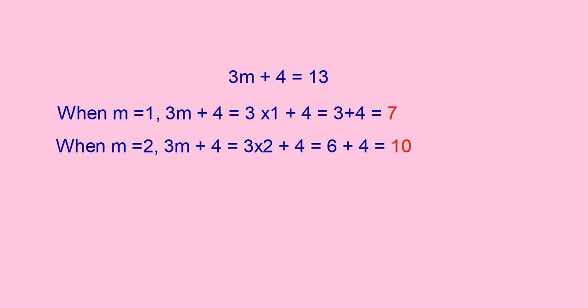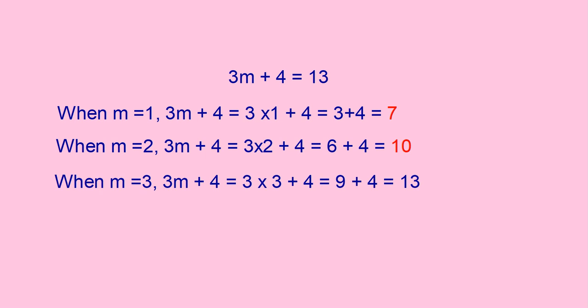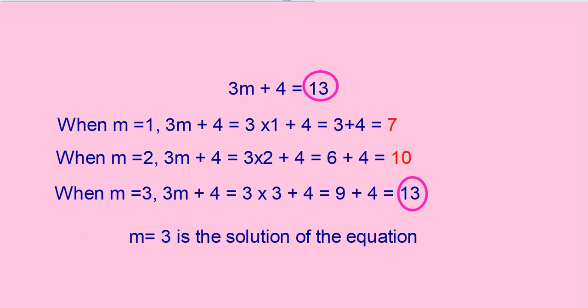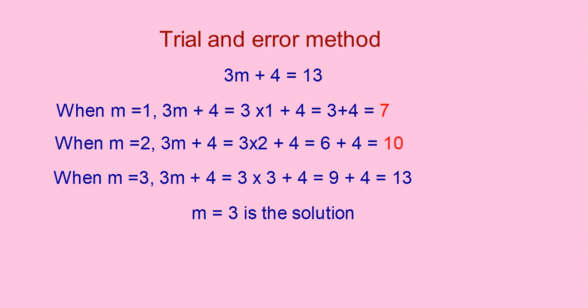Find out the value for m is equal to 3. When m is equal to 3, 3m plus 4 is equal to 3 into 3 plus 4, that is 9 plus 4, you will get 30. The RHS is 30, and when m is equal to 3, the LHS is also 30. So the value m is equal to 3 satisfies the equation, and we can say m is equal to 3 is the solution of the equation.